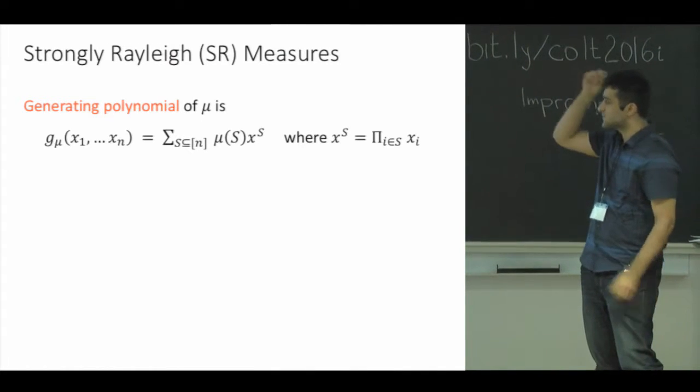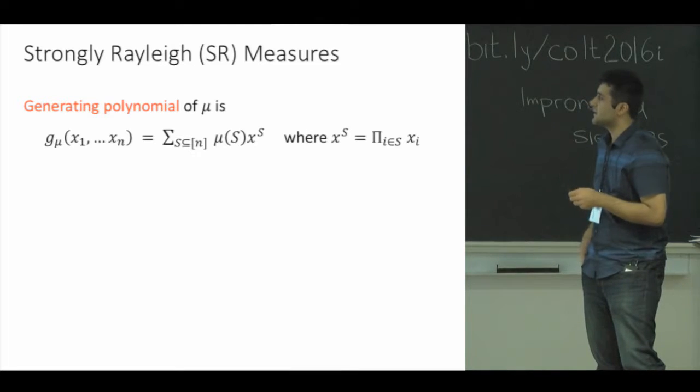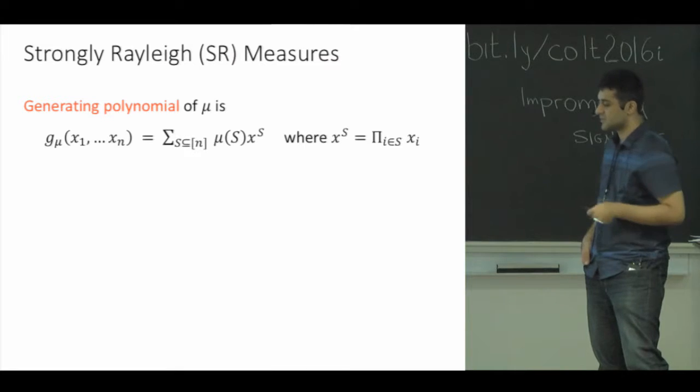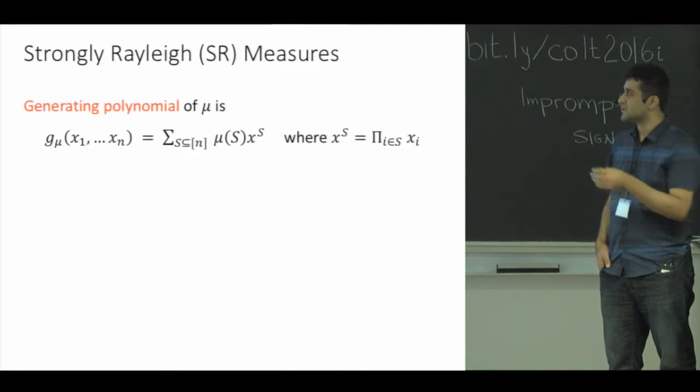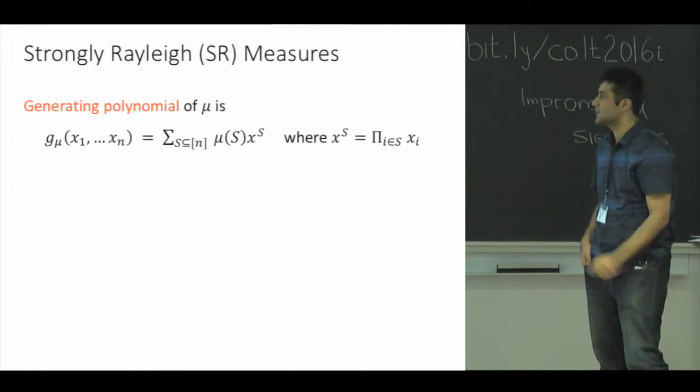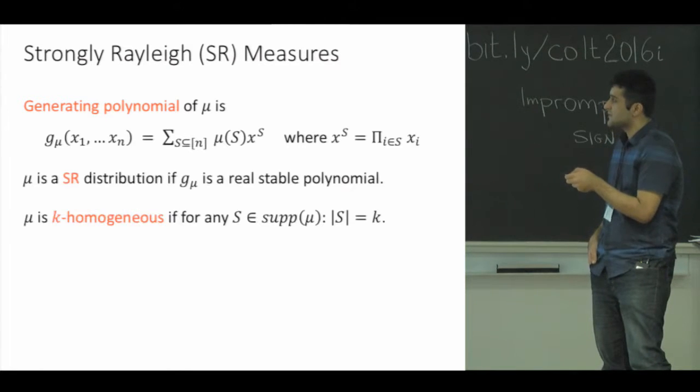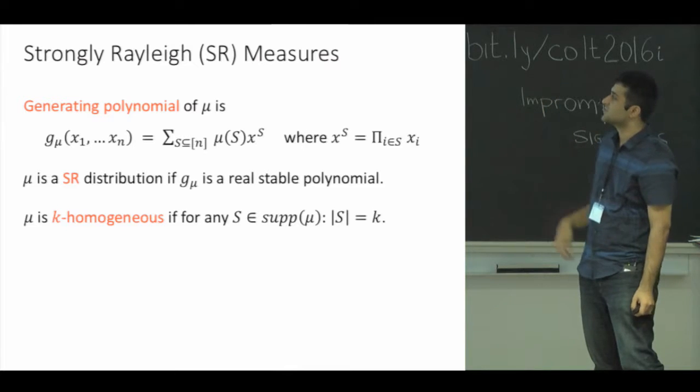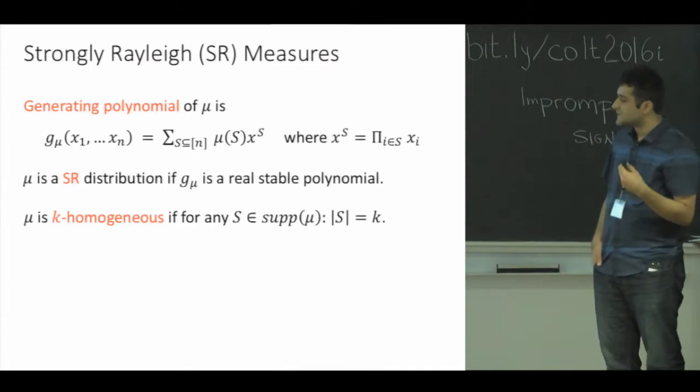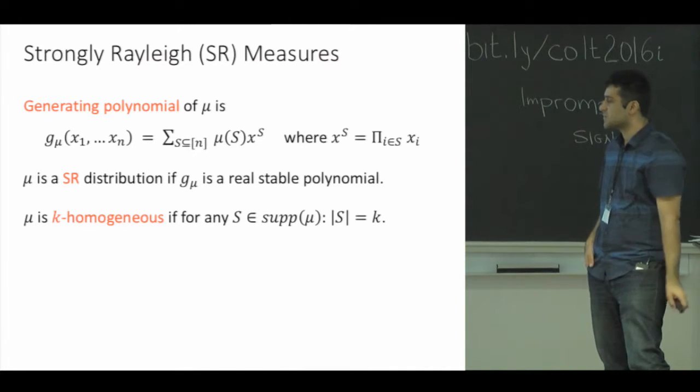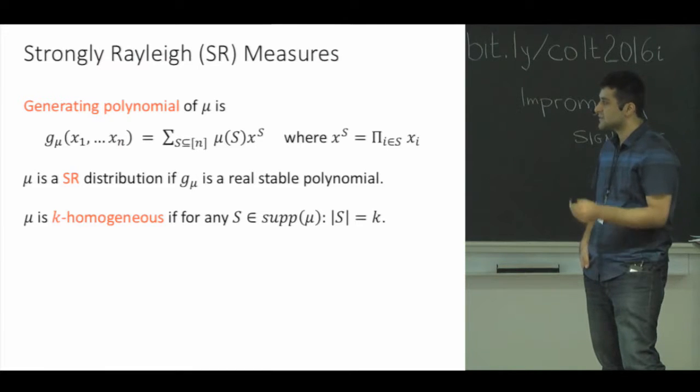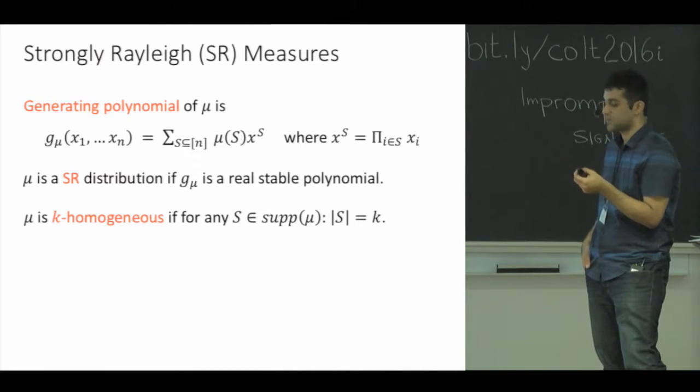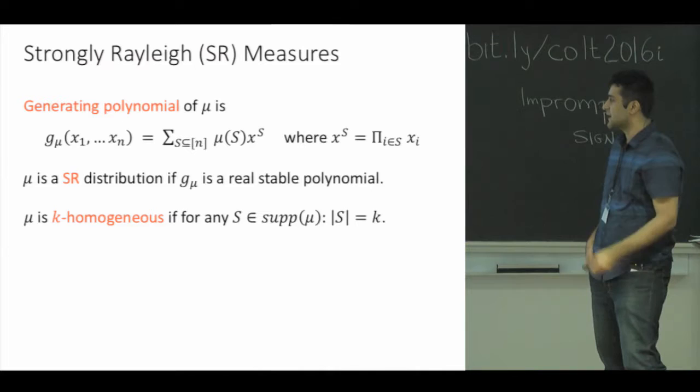It is equal to the summation, and for every subset in the support, we have a monomial in this summation which is the product of the variables indexed by that subset, and the coefficient is just the probability of the subset. We say μ is an SR distribution if its generating polynomial satisfies some algebraic property called real stability. We also say μ is k-homogeneous if all the subsets in the support have the same size k.